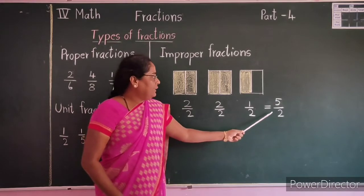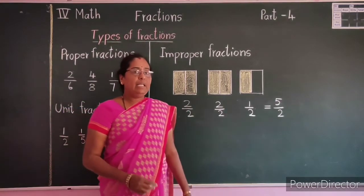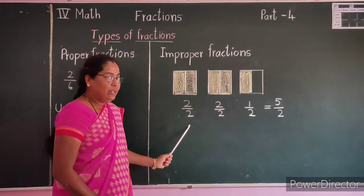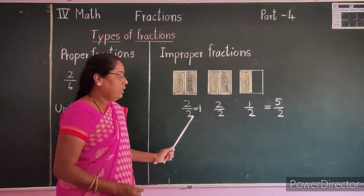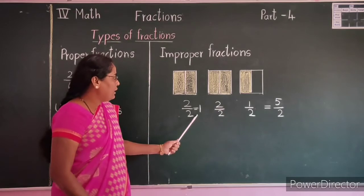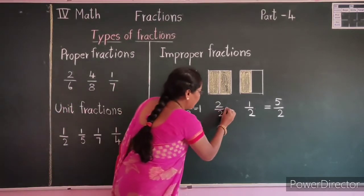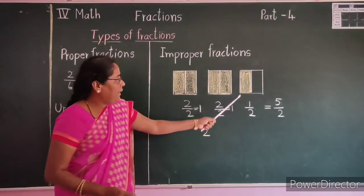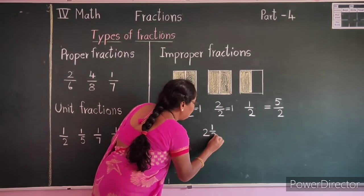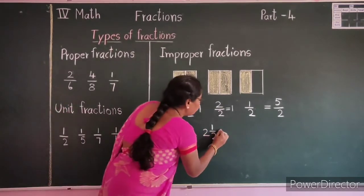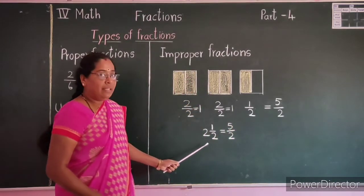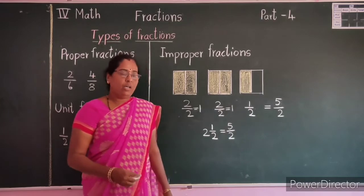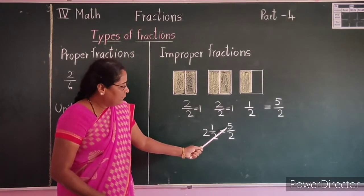Improper fractions can also be written as mixed numerals. First, you collect the whole numbers. Here, 2 by 2 means 1. If the numerator is equal to the denominator, it equals 1. Together we have 2 wholes, and 1 by 2. So 2 and 1 by 2 is equal to 5 by 2. These are mixed numerals — a fraction with a whole number combined. And this one is an improper fraction where the numerator is greater than the denominator.